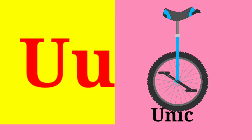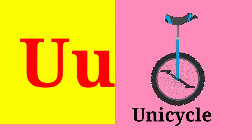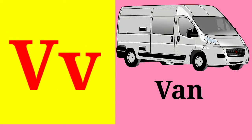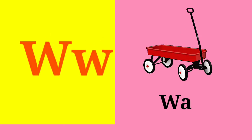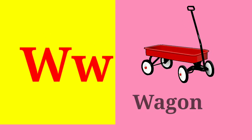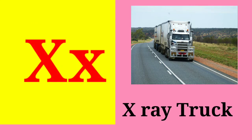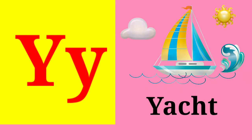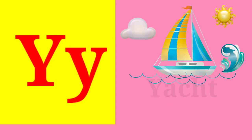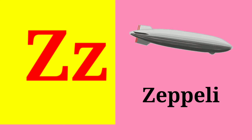U. U is for unicycle. V. V is for van. W. W is for wagon. X. X is for x-ray truck. Y. Y is for yacht. Z. Z is for zeppelin.